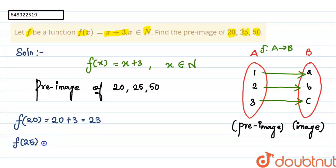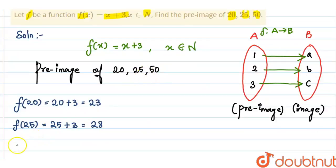Then, f(25) = 25 + 3 = 28. Then, f(50) = 50 + 3 = 53.